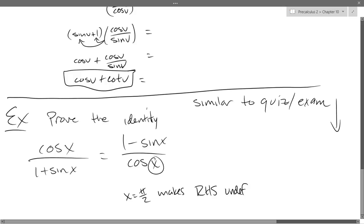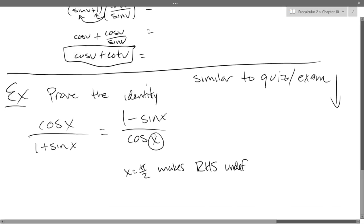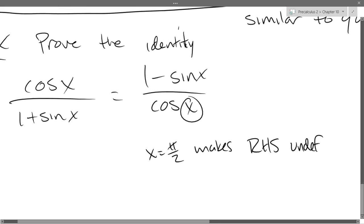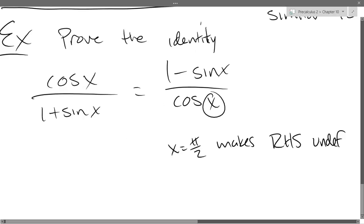So pi over 2 makes the right-hand side undefined. What does pi over 2 do on the left? Sine of pi over 2 is 1 — and wait, I think I messed up writing this down.